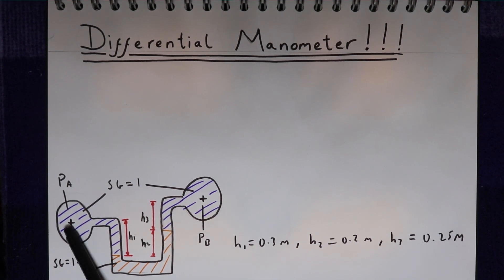We have water in both of the pipes, and the gauge fluid in the manometer is mercury with a specific gravity of 13.6. And what we want to work out in this example is the pressure difference between these two pipes.